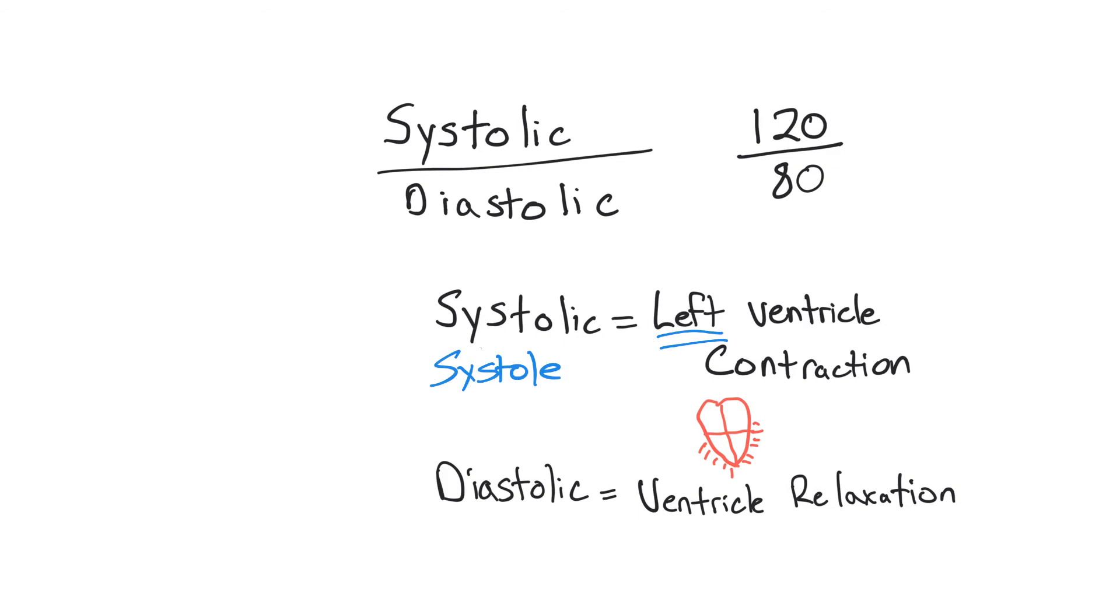right there at the elbow, you can measure their blood pressure. And the top number that you hear, the first thump you hear, is the strength of the ventricles contracting, the left ventricle contraction.